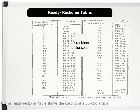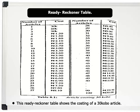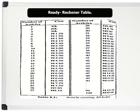Here is a sample of a Ready Reckoner for an article costing 30 colbo. Notice that the table has columns for the number of articles and the corresponding costs. For example, 20 articles cost 6 nara. 50 articles cost 50 nara. And 100 articles cost 30 nara.